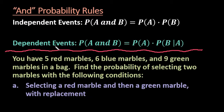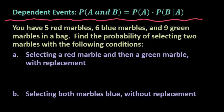Dependent events means that the probability of the second event changes given that the first event has already occurred. To find this, we use the probability of A and B is equal to the probability of A times the probability of B given that A has already occurred. Just to demonstrate both of these probability rules, I have a situation here.